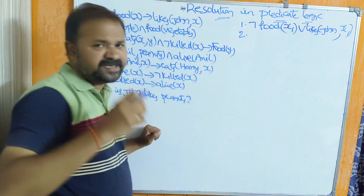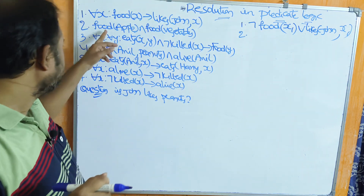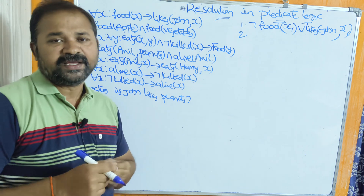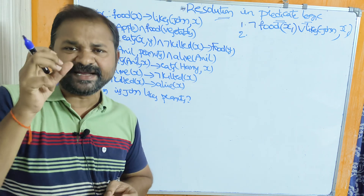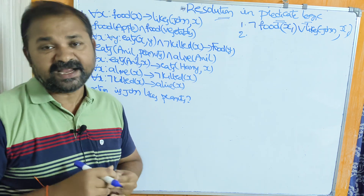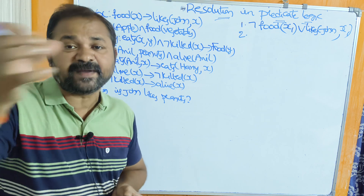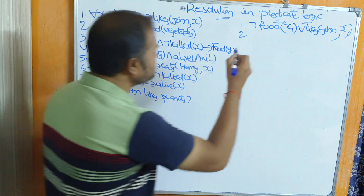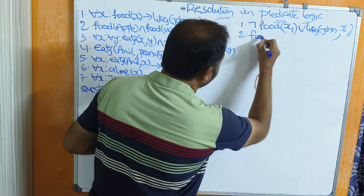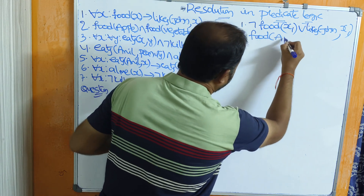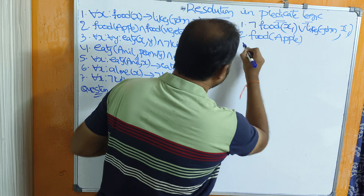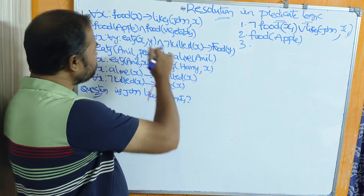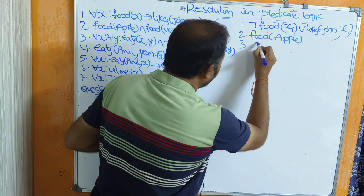Next: food(yappy) AND food(x1). When a well-formed formula contains an AND operator, we divide it into multiple statements. So the first statement is food(yappy), and the next clause form statement is food(vegetables).